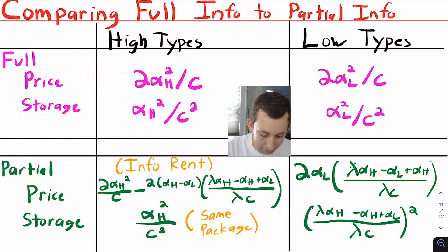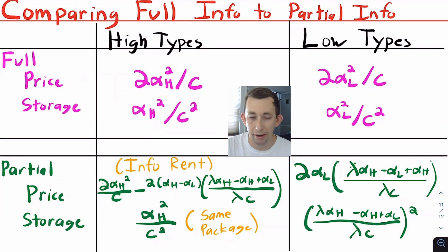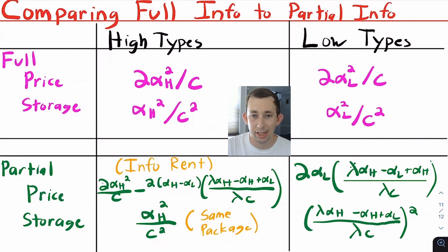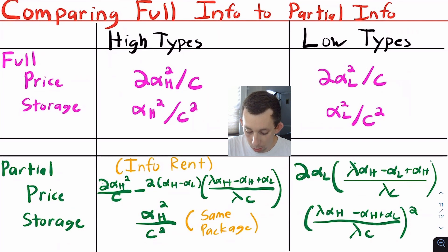High types are getting the same amount of storage as before but at a slightly lower price, so they're actually better off under asymmetric information than under full information. For low types, it's not the case that they're better off — they're exactly as well off as before. Under full information, the firm was extracting all the surplus, so low types had utility of zero. Now they still have utility of zero because the IR constraint for low types binds. Their utility still equals their outside option of zero, so they're no better off under partial information.